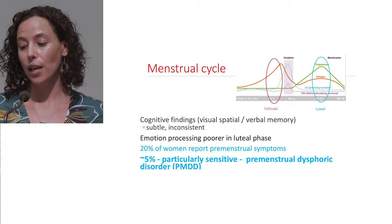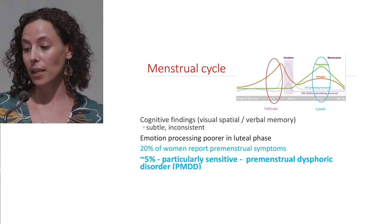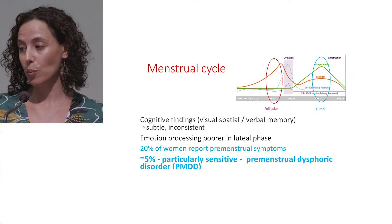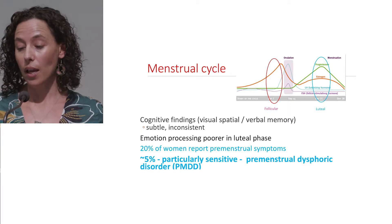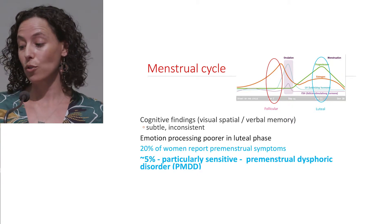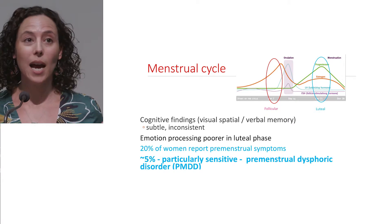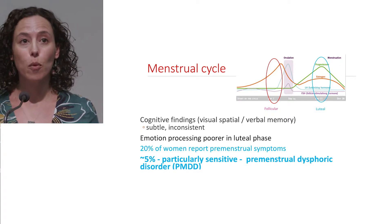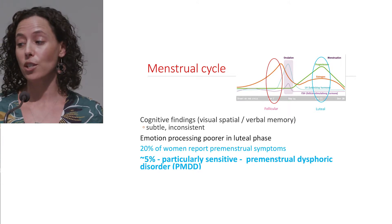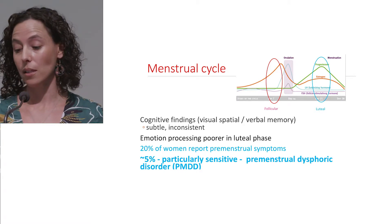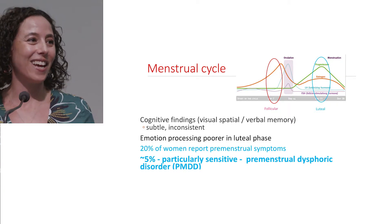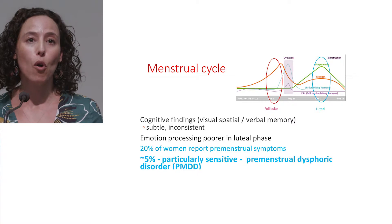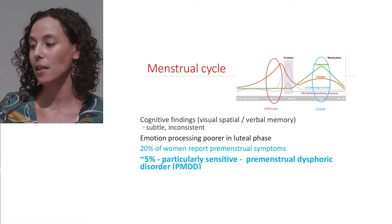Emotion regulation and emotion processing findings are more consistent, and in the luteal phase emotion processing becomes poorer. 20% of women report premenstrual symptoms in this luteal phase just prior to menstruation, and about 5% of women experience particularly clinically disabling symptoms — premenstrual dysphoric disorder, or PMDD. Within our research team we're doing a lot of work to understand why some women are particularly sensitive to these hormonal fluctuations and develop these clinical symptoms prior to menstruation each month, which then resolves with the onset of menses.